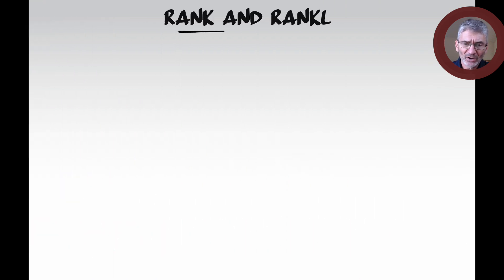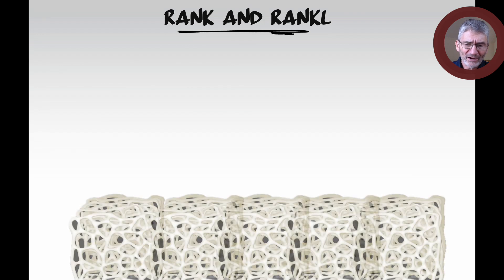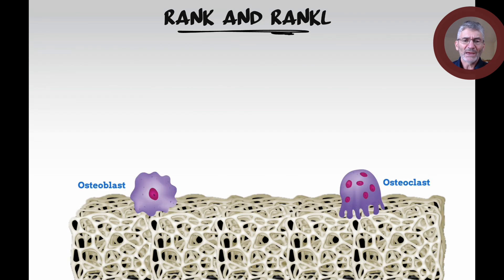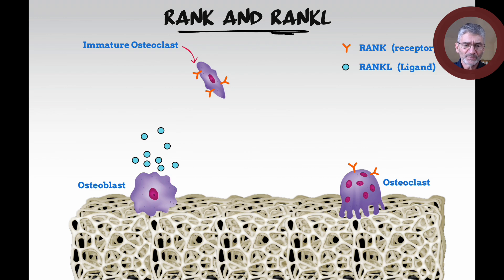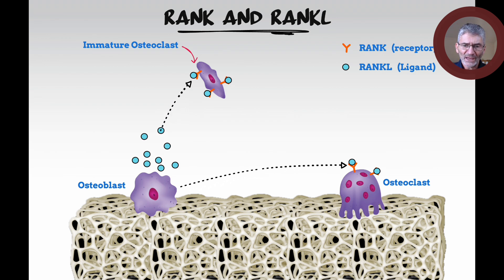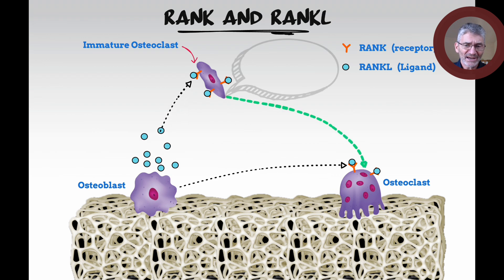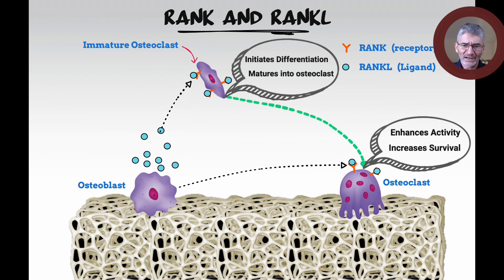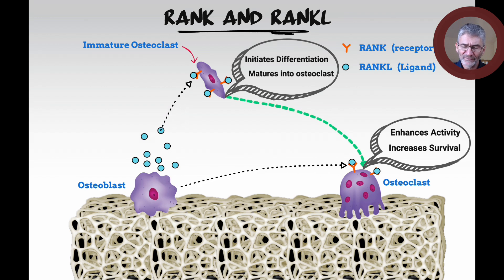Let's have a deep dive into RANK and RANKL. Here we have our osteoblasts and osteoclasts, and an immature osteoclast. The RANK receptor is found on the immature osteoclast and the osteoclast. RANKL is produced by the osteoblasts and attaches to the RANK receptor. In doing that, it initiates differentiation of the immature osteoclast and matures it into an osteoclast, while directly on the osteoclast it enhances activity and increases survival of the osteoclast.